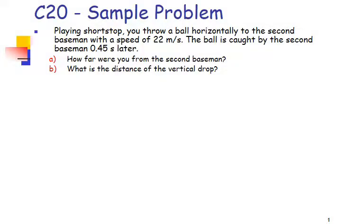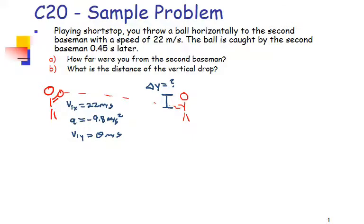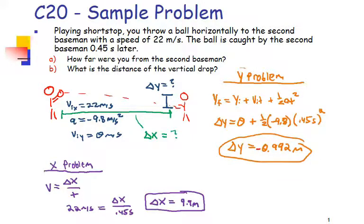Finally, a ball is thrown horizontally to a second baseman at 22 meters per second and caught 0.45 seconds later. How far are you from the second baseman, and what is the vertical drop? The initial X velocity is 22 m/s, acceleration is negative 9.8 m/s², and initial Y velocity is zero — that's the critical piece. The displacement in X is 9.9 meters, and the vertical drop is 0.992 meters.